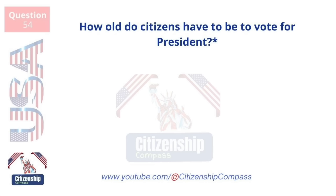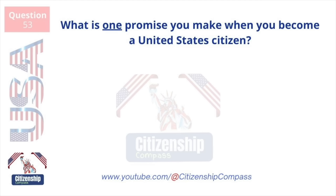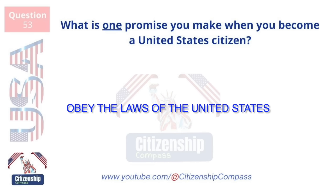How old do citizens have to be to vote for president? Eighteen and older. Who vetoes bills? The president. What is one promise you make when you become a United States citizen? Obey the laws of the United States.